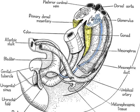This image shows the gonadal ridge in yellow along the dorsal border of the coelomic cavity. Germ cells originating in yolk sac endoderm must migrate along the gut wall and up the dorsal mesentery to reach the gonadal ridge.